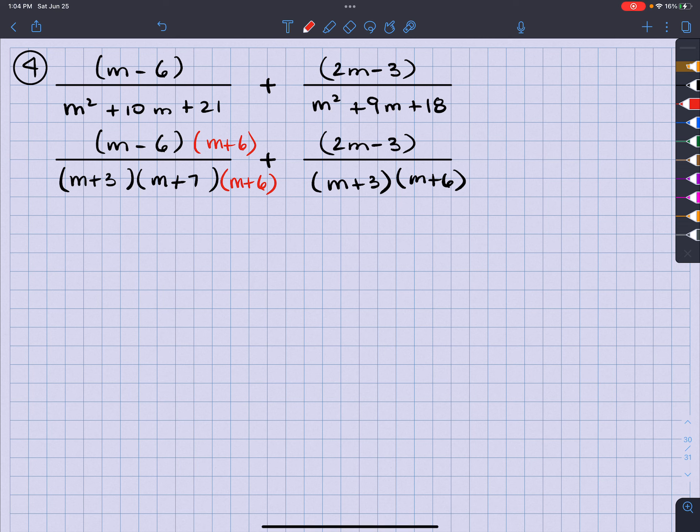Over on the right, what is that sister missing? That sister is missing an M plus 7. So if I do that to the bottom, I have to do that to the top.